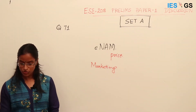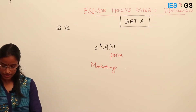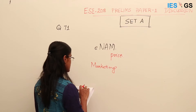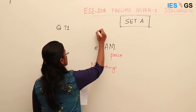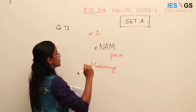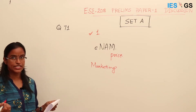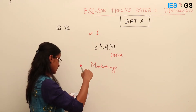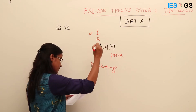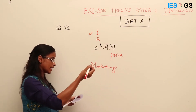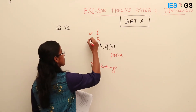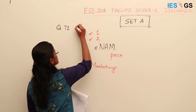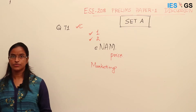eNAM serves two purposes as given in the question: it is designed to create a unified national market instead of the fragmented physical markets, and farmers can showcase their product online while buyers can quote the price and get the produce. So both statements 1 and 2 are correct. The answer is option C.